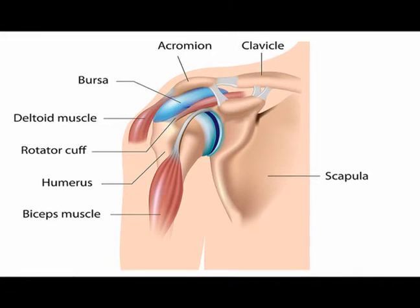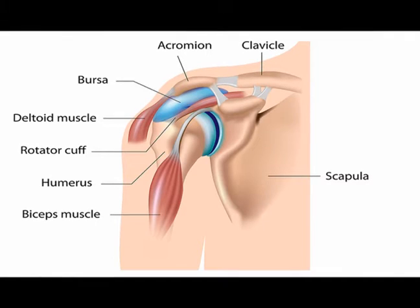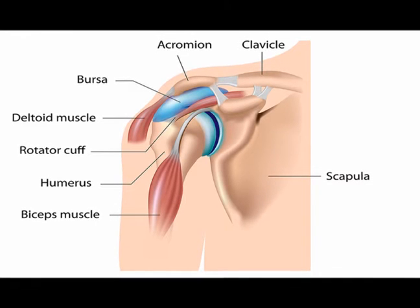A bursa is a fluid-filled sac that functions to increase motion by reducing friction. A bursa sac is located in between two structures that rub together.